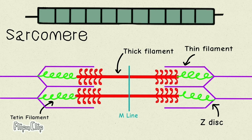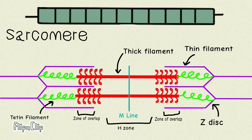As you can see in the image, there are two regions in the sarcomere. The middle portion near the M-line is known as the H-zone — this is the zone where only the thick filament is present. Flanking the H-zone on both sides is the zone of overlap, which is the region where the thick filament overlaps the thin filament.